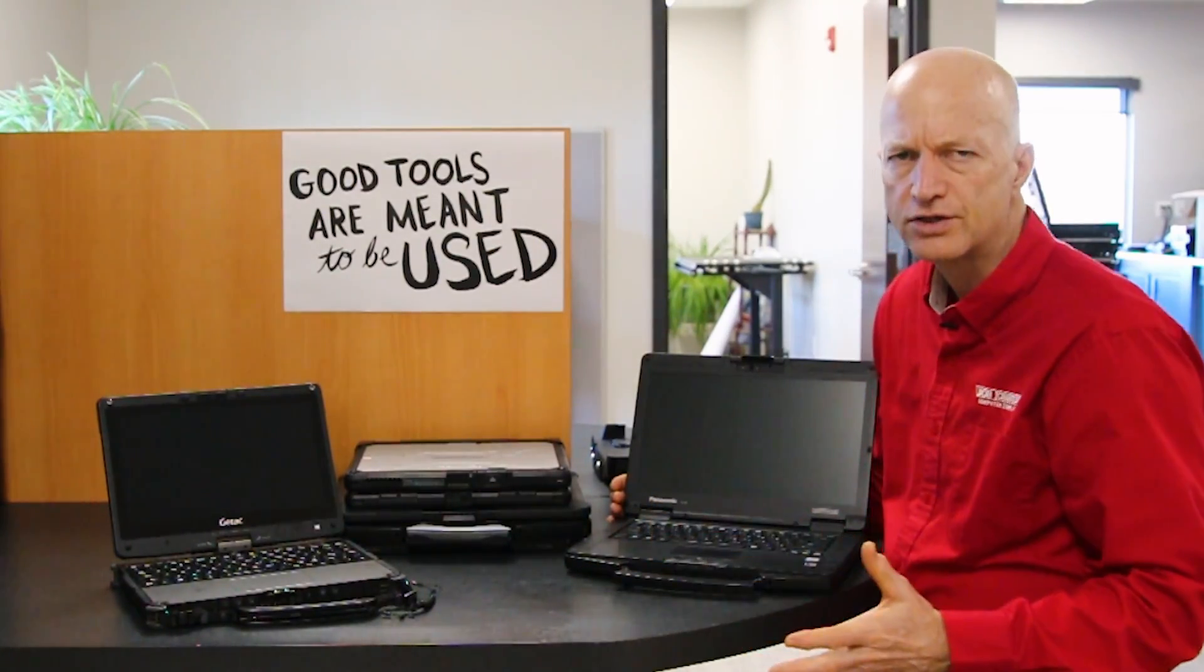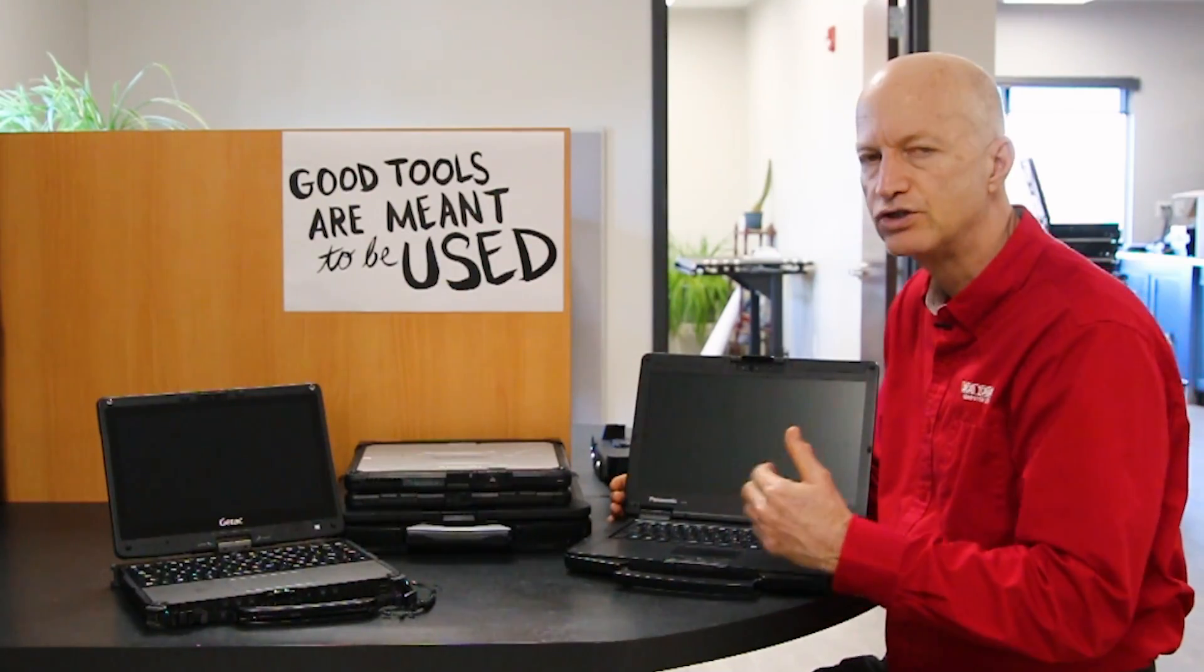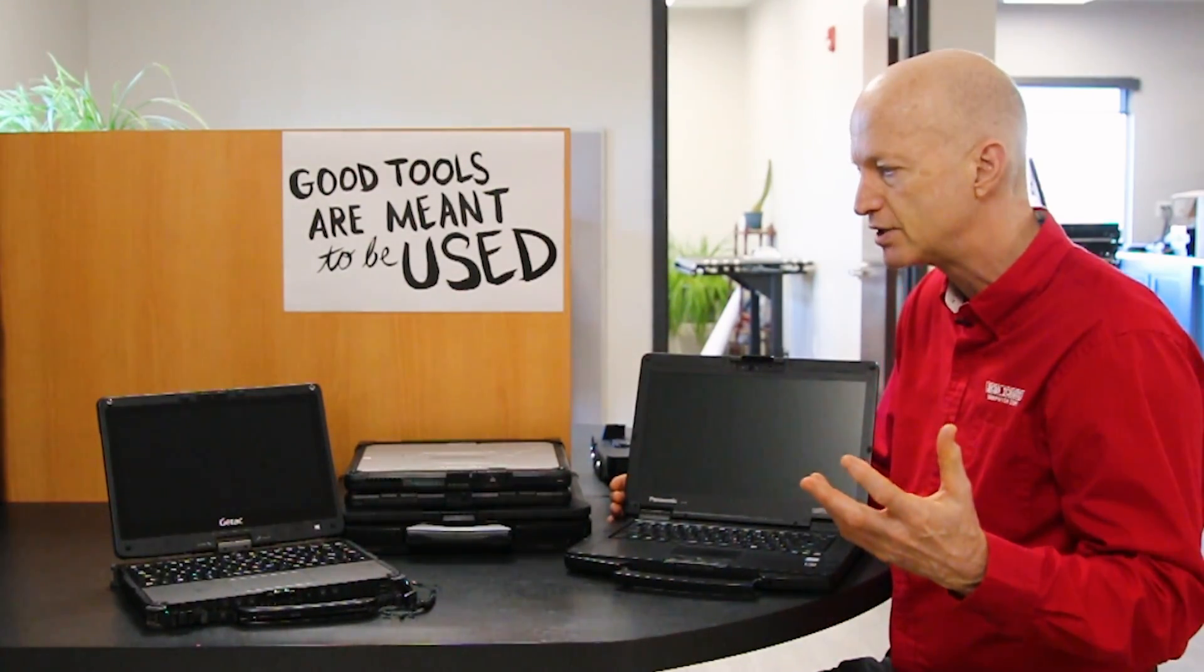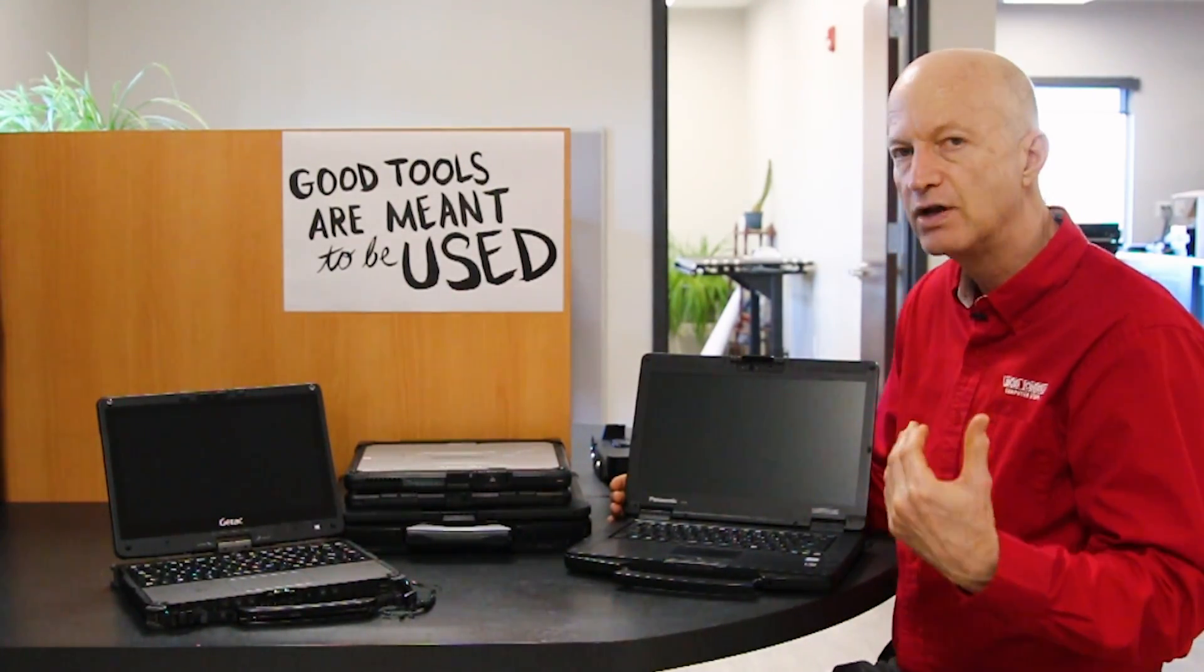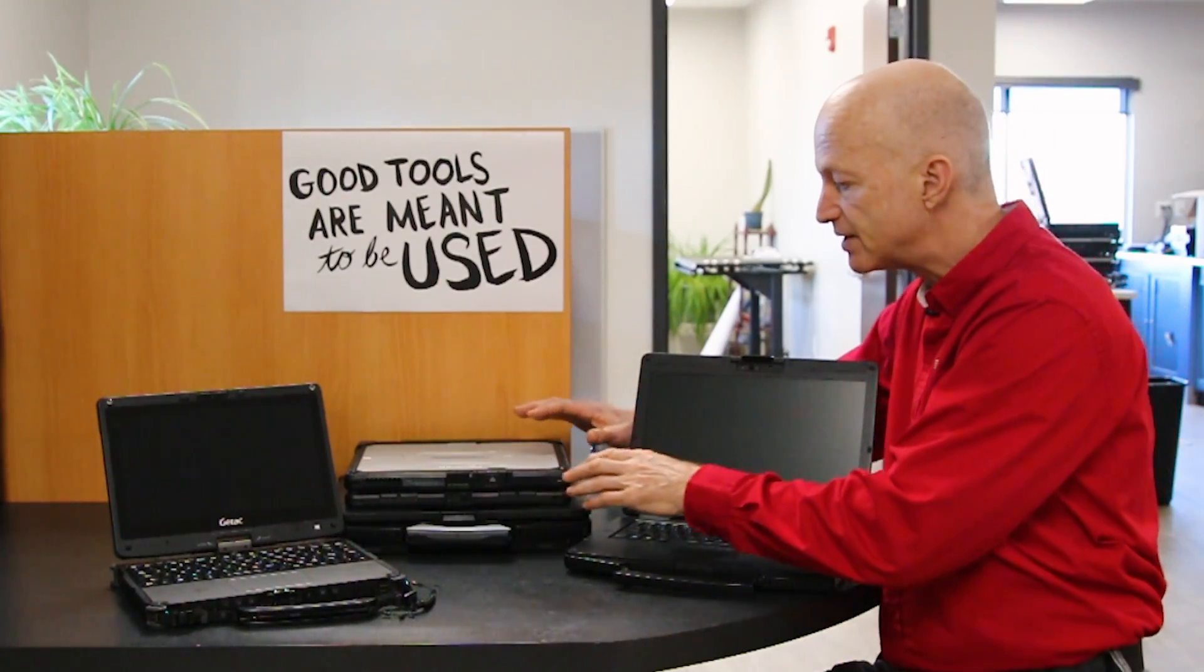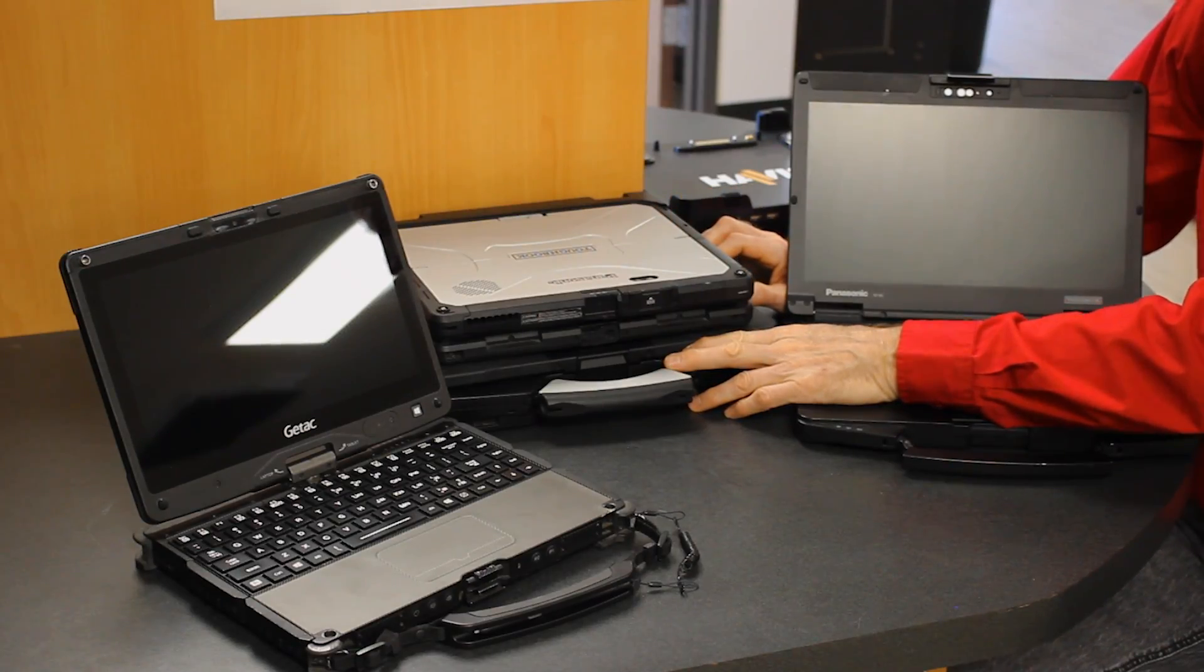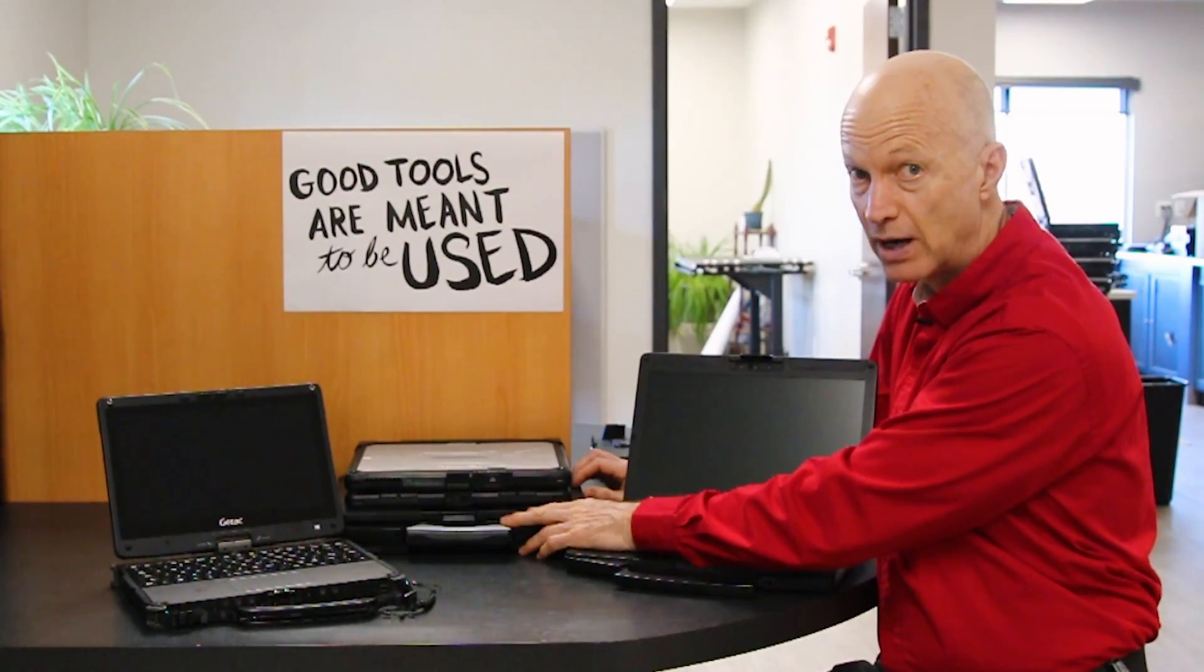So number three is cost. Basically what is your budget? You need to determine what your budget is. So for example if you can buy brand new and you want to buy an FZ-40, guess what? You're going to spend between five and six thousand dollars for that unit. That's brand new.